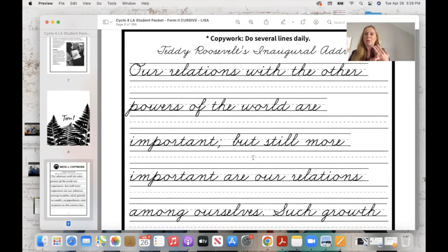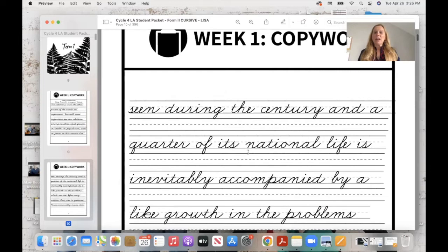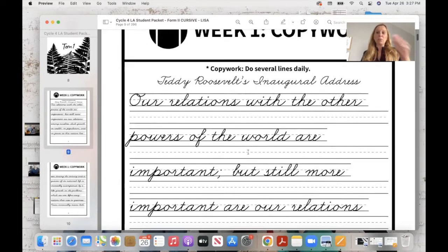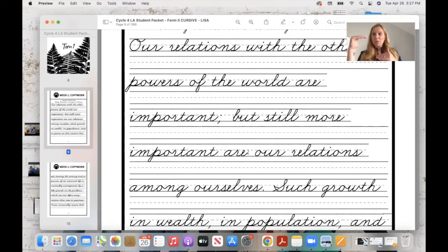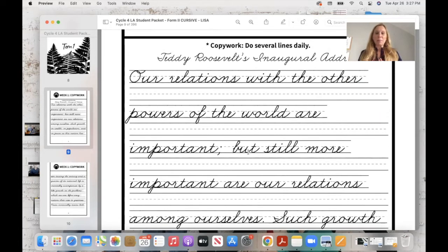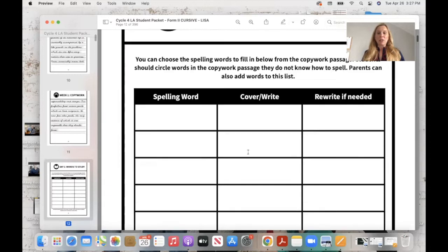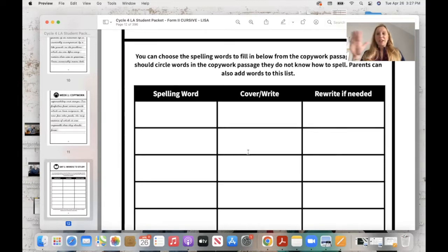Same thing for Form 2, they have a copywork passage that's for the week. They're going to do a little bit of copywork each day. Then they're going to practice their spelling words. Now the spelling words are going to come from this copywork passage, but in Form 2, you and your child are going to decide how much of the copywork passage you're going to want, expect them to know from memory for dictation. It is not going to be the whole thing at first. Especially if they're in fourth grade, it might just be the first sentence. Start small, or maybe this is a very long sentence up to the semicolon here. So you and your child will look at the passage, our relations with other powers of the world are important. You'll decide what words they need to know how to spell. I'm thinking relations, powers, important, they probably don't know how to spell. And you're going to add those to this list of spelling words that your child's going to practice for the week.